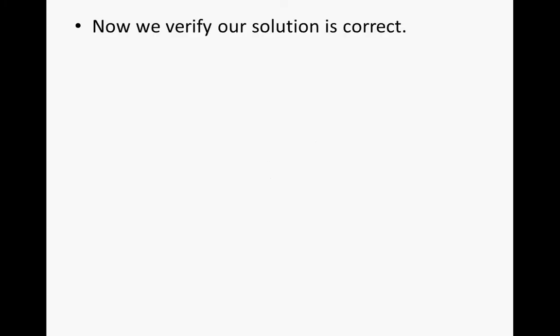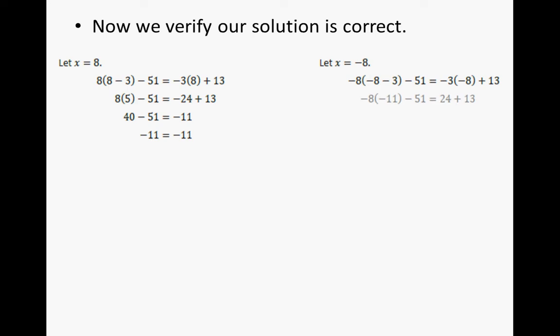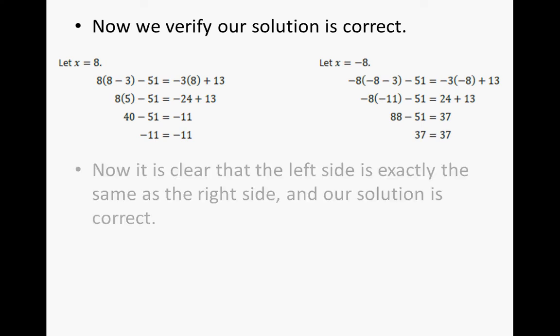So now we verify our solution is correct. Let x equals 8. Therefore, by substituting 8 for x, as we work the equation down, we get negative 11 is equal to negative 11. What happens if x is a negative 8? While substituting x for negative 8, we simplify both sides of the equation until we get 37 is equal to 37. Now, it is clear that the left side is exactly the same as the right side, and our solution is correct.